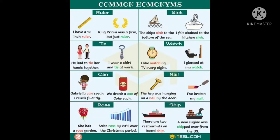He had to tie her hands together. Here tie means something we are tying, for example. And then: I wear a shirt and tie at work. That tie is very different. And then watch: I like to watch TV every night. So here both uses of watch have different meanings.